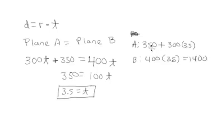And then plane A, 350, they've gone 350 miles, plus they've gone 300 miles per hour for 3.5 hours. So 300 times 3.5 is equal to 900, and 300 times 0.5 is equal to 150, so that's 1,050 plus 350 is equal to 1,400. So we've double checked our work, and 3.5 hours looks correct.